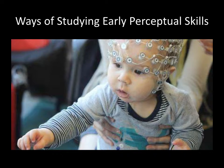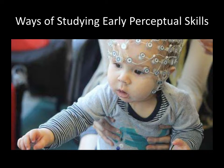A third option is using the principle of operant conditioning. Babies might be trained to turn their head when they hear a particular sound, using a moving toy as reinforcement to establish this movement. After the learned response is established, the experimenter can vary the sound systematically to see whether the baby still turns her head. Why do you think we often study babies for the topic of sensation and perception instead of other populations?